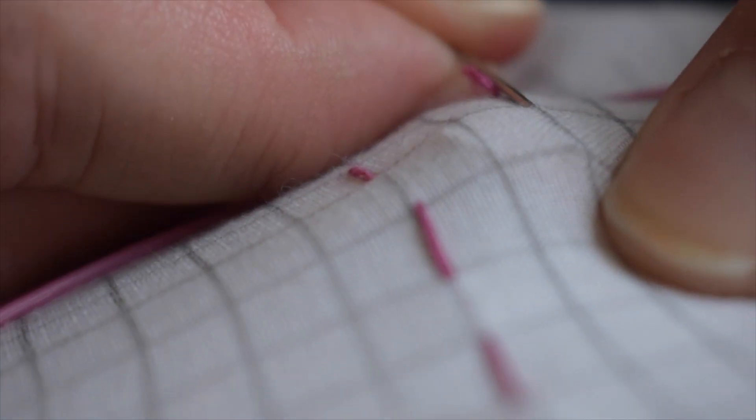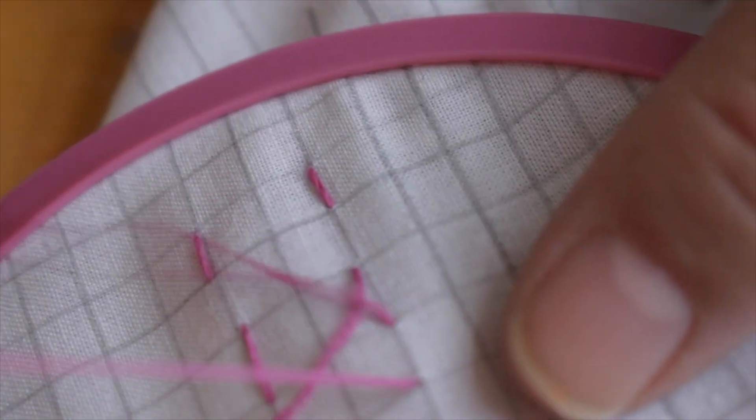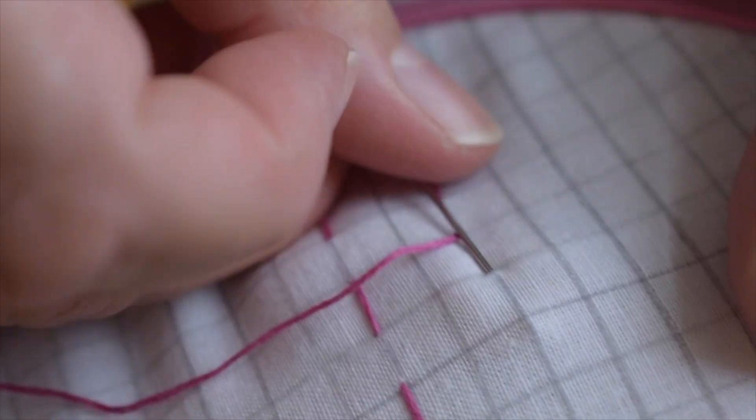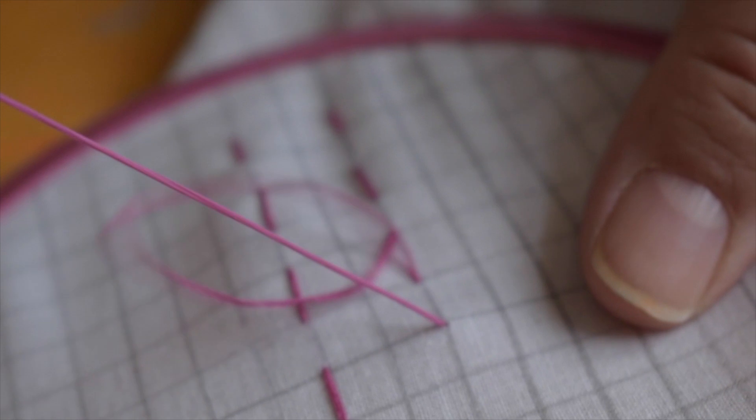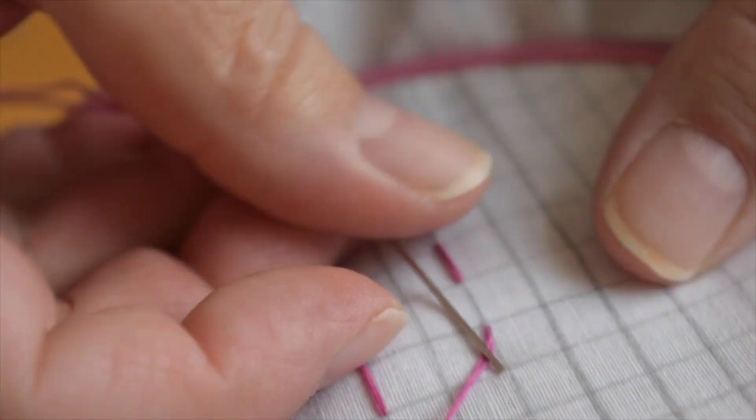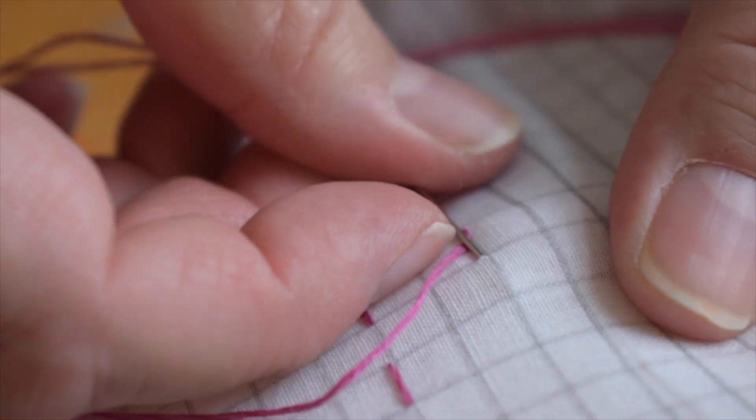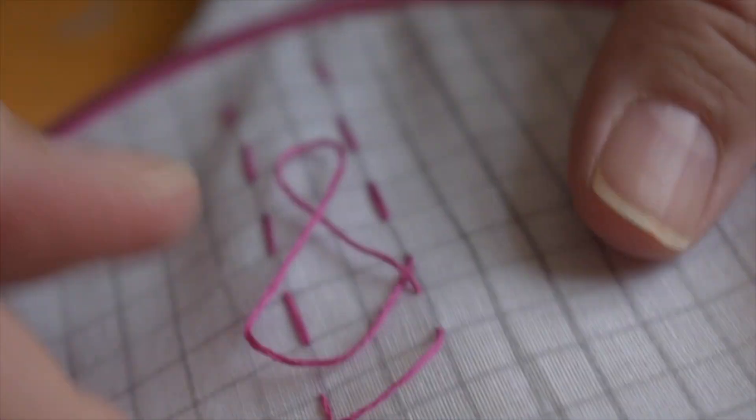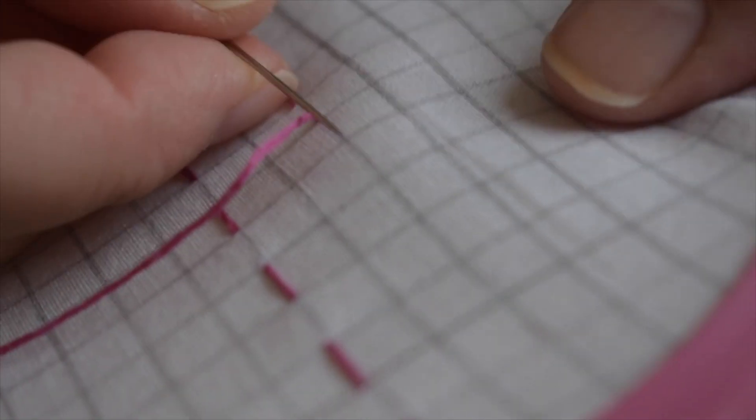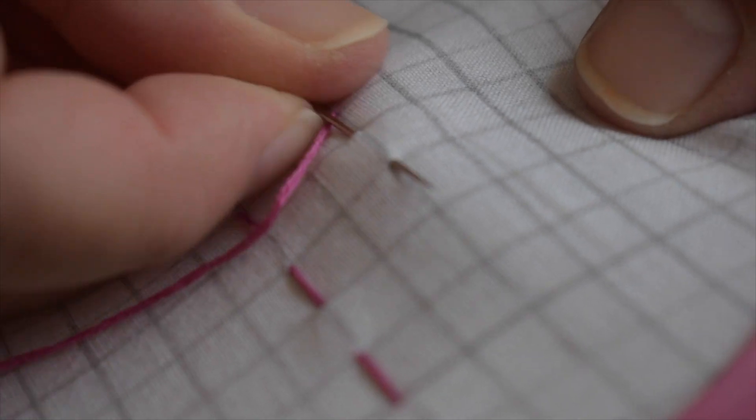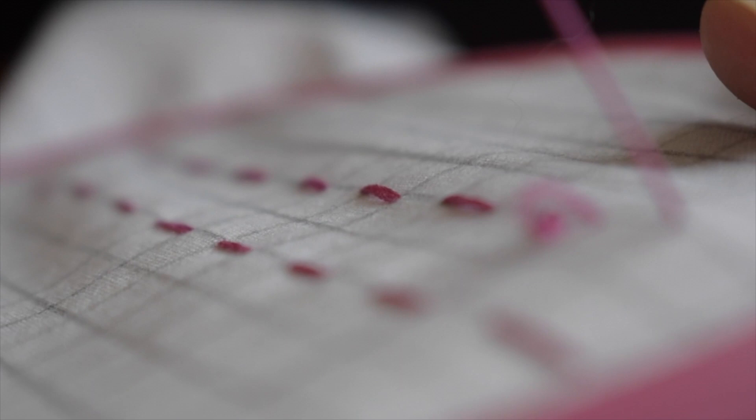But this time when I make the running stitch, I'm going to put the needle down through, down into the fabric, and then get the point to come up through the next spot and just keep going everything like that. It will make it faster for me to stitch this way, and it is also considered skilled to be able to put five or six stitches on your needle before you pull it through.